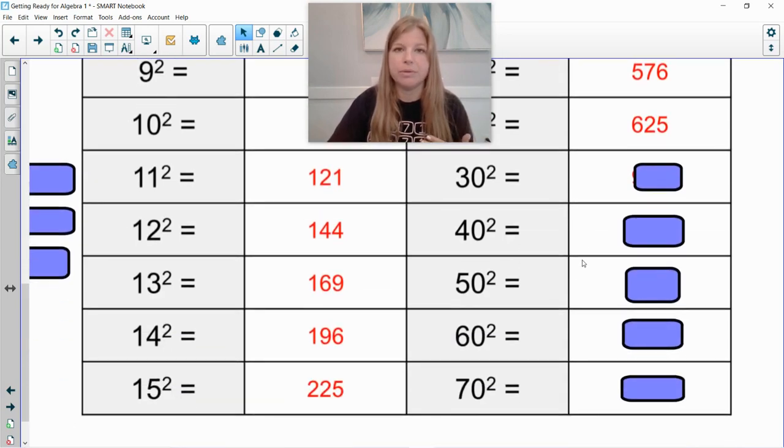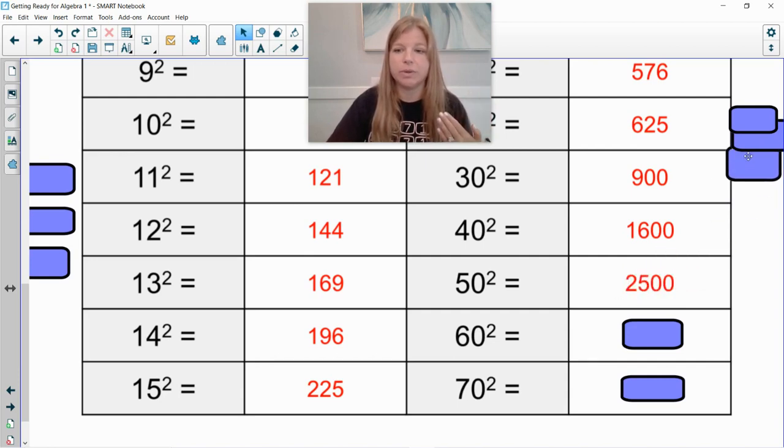The last five that I want to go through with you should be very easy to figure out. If 20 squared was 400, 30 squared, we'll think 3 times 3. 3 times 3 is 9. So 30 squared is 900. So then 40 squared, 4 times 4 is 16. So 40 squared is 1600. 50 squared, 5 times 5 is 25. So 50 squared is 2500.